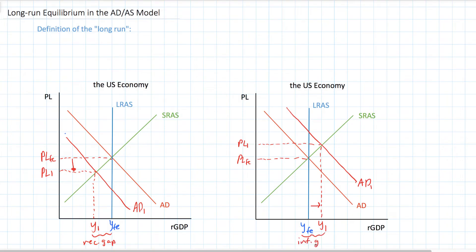In these two graphs, we have illustrated a recessionary gap and an inflationary gap. Output is beyond full employment in the graph on the right. In the short-run, inflationary gaps and recessionary gaps are possible because of wage inflexibility — the fact that firms must reduce employment and output when demand falls because they cannot lower wages, and the fact that firms will increase output and employment when demand rises because they can hire more workers at the same inflexible wage rate. These are our short-run outcomes.